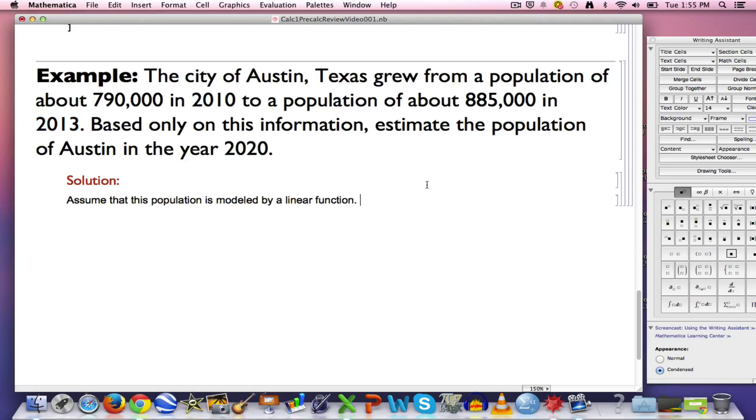So the general form of the formula is going to be that the population will equal the initial value plus the rate of change times the time, where time equals zero is the starting time. So that's a basic kind of formula that can generate a function that's going to be a linear function that's going to model this kind of situation.